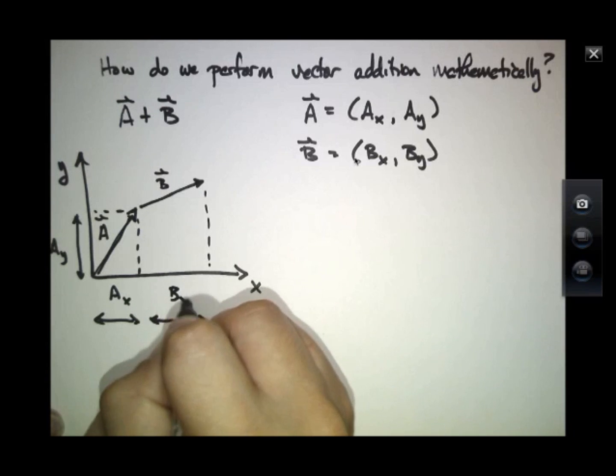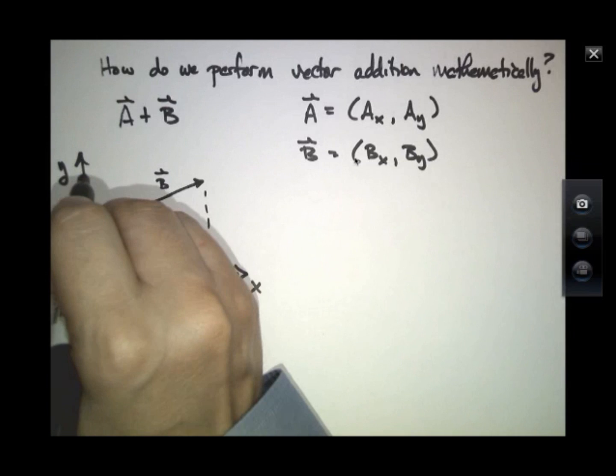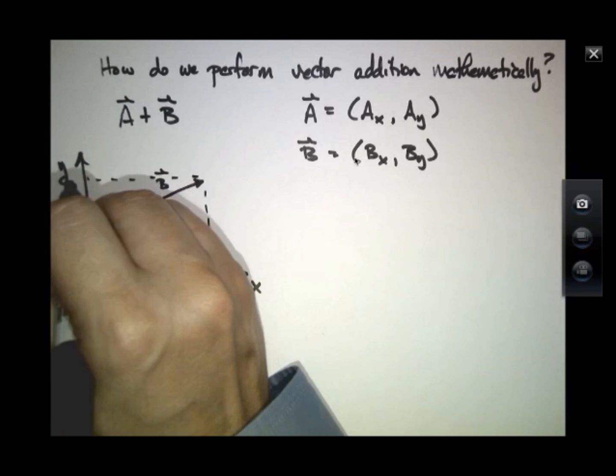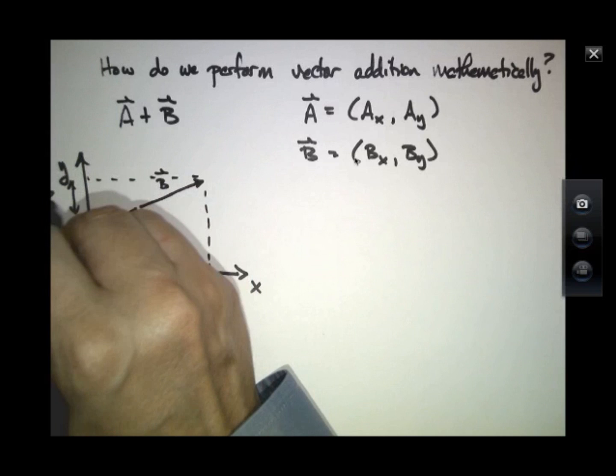This length right here is BX. And this length right here is BY.